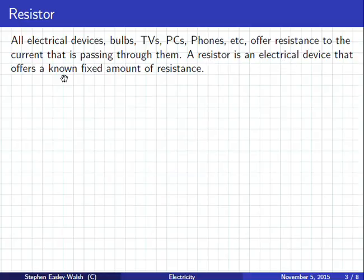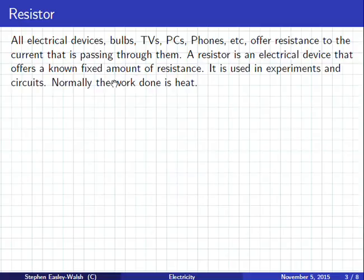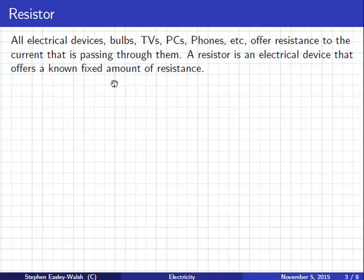All electrical devices—bulbs, TVs, PCs, phones, etc.—they offer resistance when the current passes through them. So it doesn't matter what it is. If there's a current going through it, there's resistance. So there's always resistance.